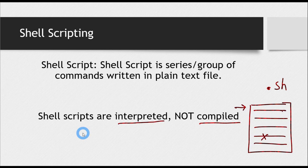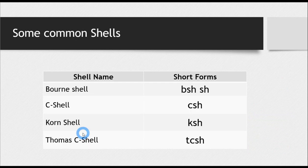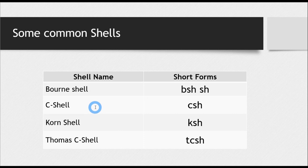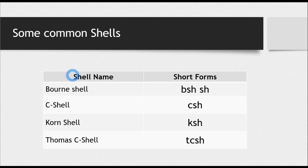Now let's see some common shells. There are different shells — for example, Bourne shell, C shell, Korn shell, TC shell, and so on. Each shell offers different functionalities, and depending upon our need, we choose the shell for which we want to do the programming. The shell scripting for each shell is slightly different, and as mentioned, we will be learning shell scripting for Bourne shell.